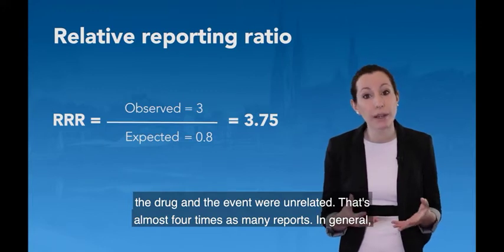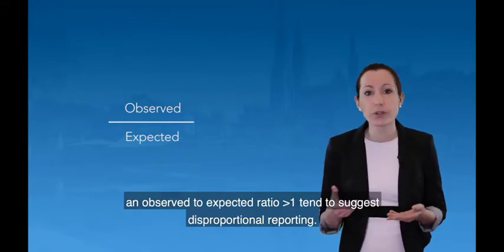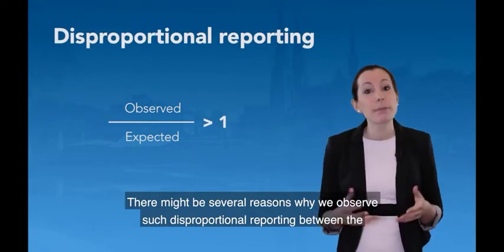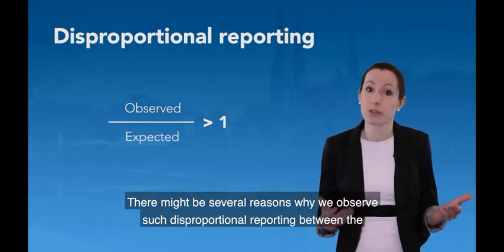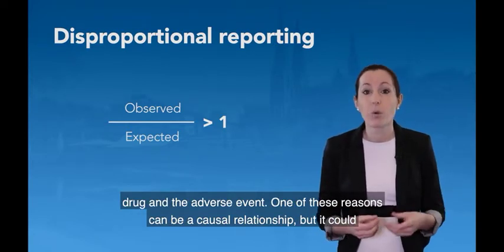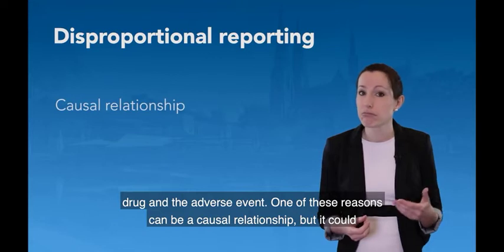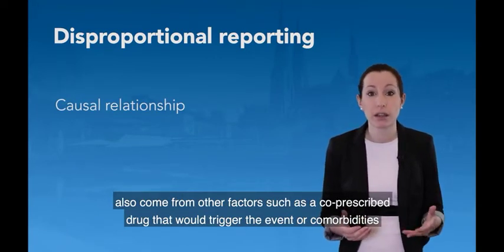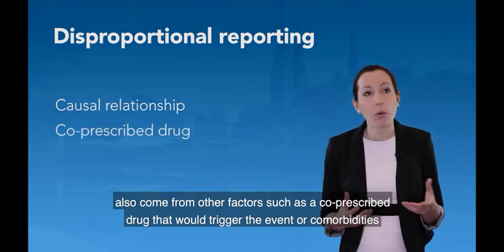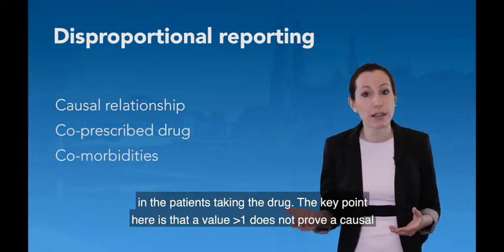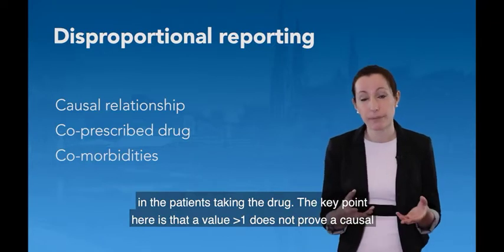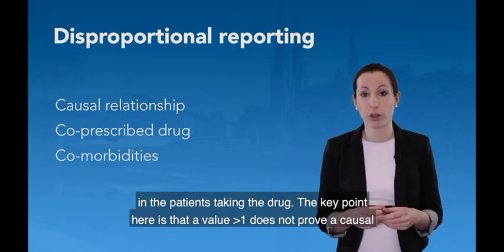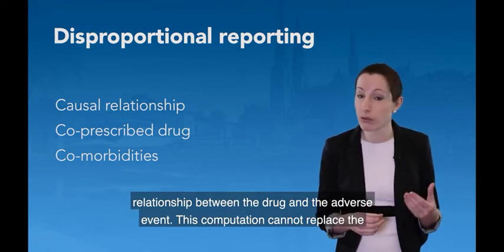That's almost four times as many reports. In general, an observed to expected ratio above 1 tends to suggest disproportional reporting. There might be several reasons why we observe such disproportional reporting between the drug and the adverse event. One of these reasons can be a causal relationship, but it could also come from other factors such as a co-prescribed drug that would trigger the event, or comorbidities in the patients taking the drug. The key point here is that a value above 1 does not prove a causal relationship between the drug and the adverse event.